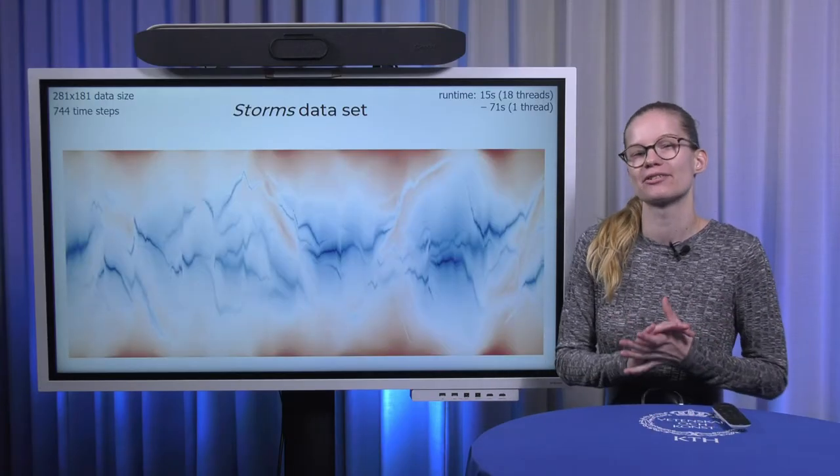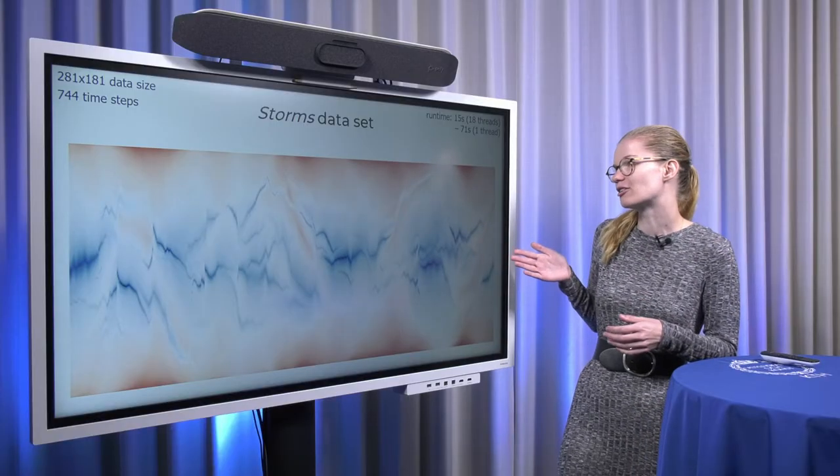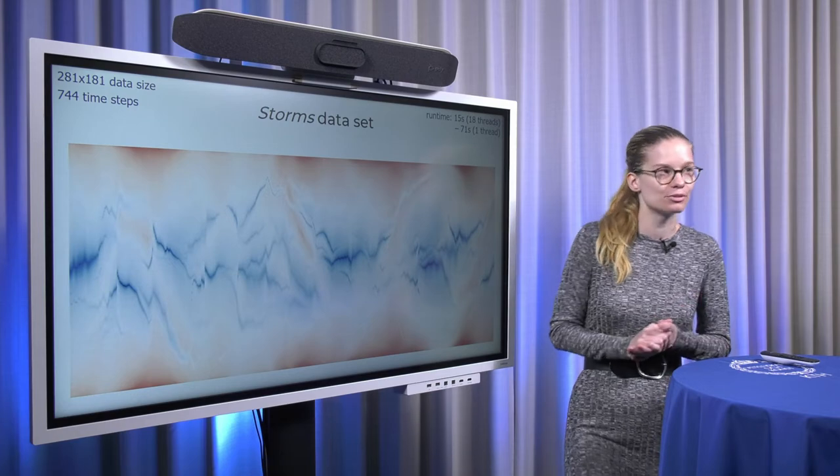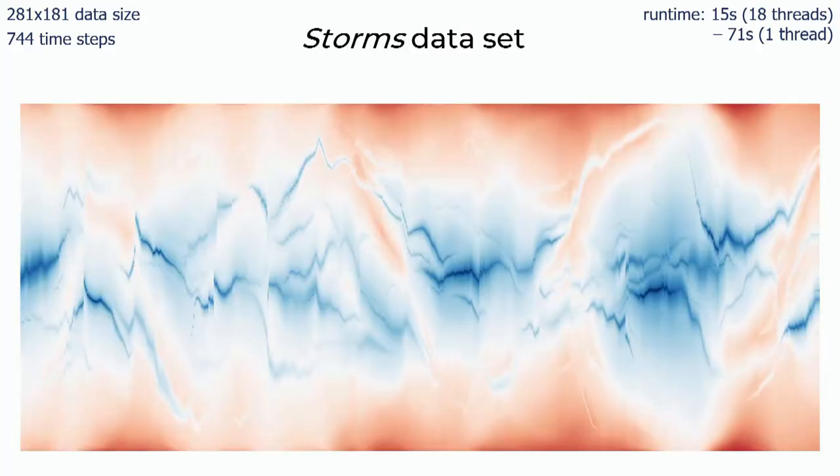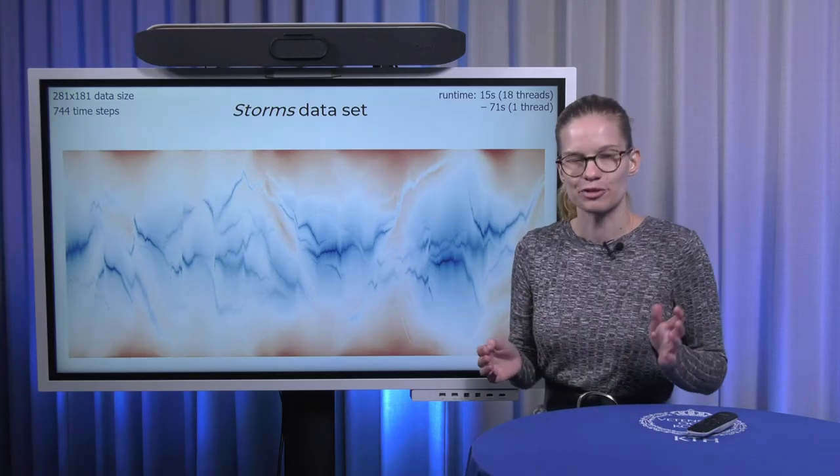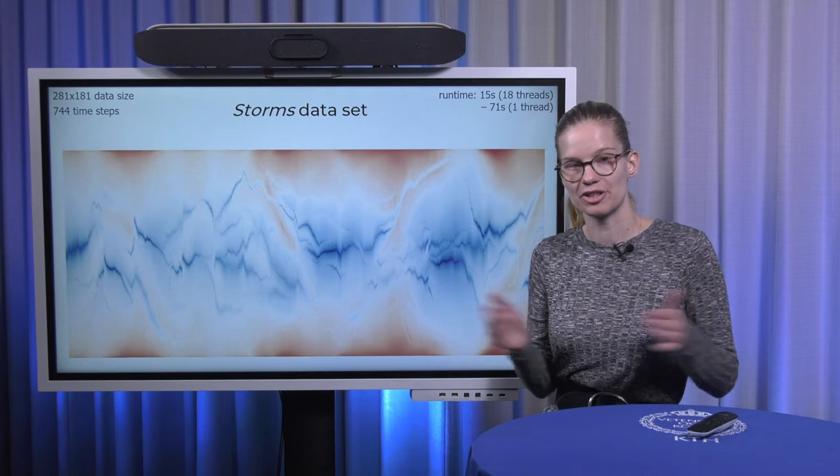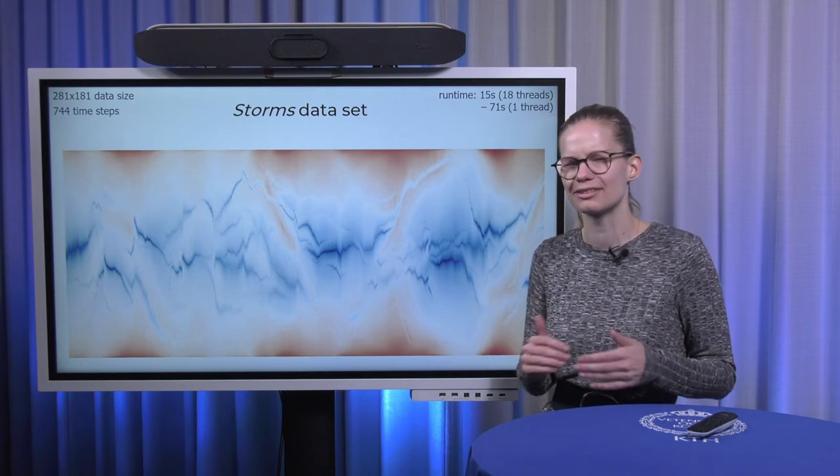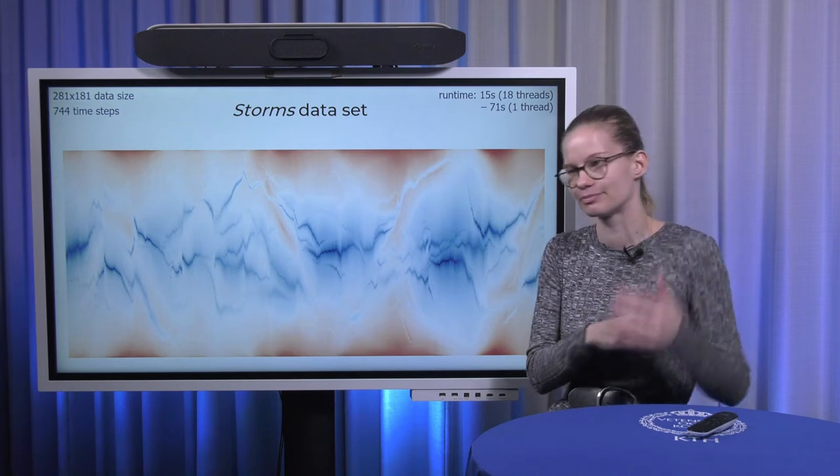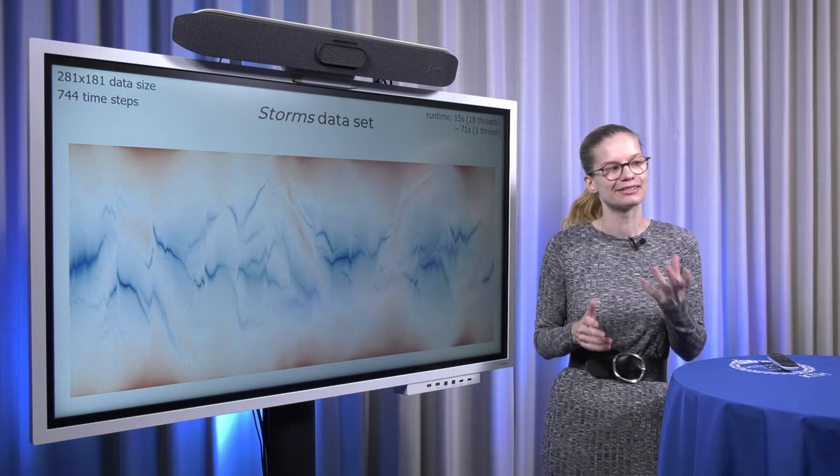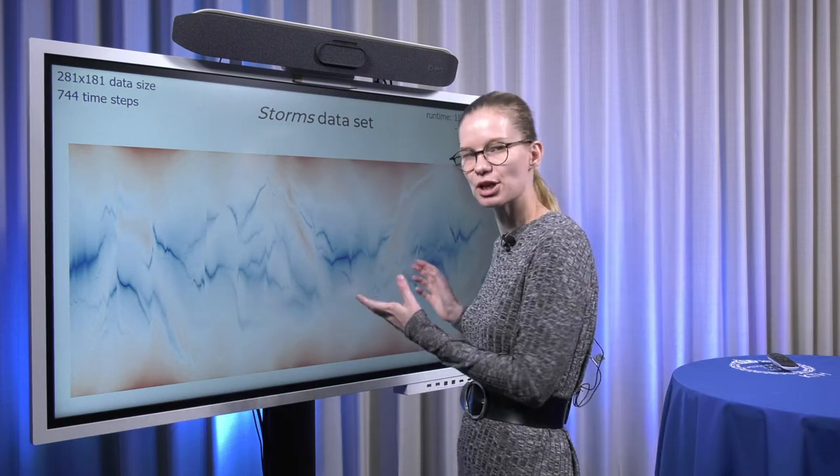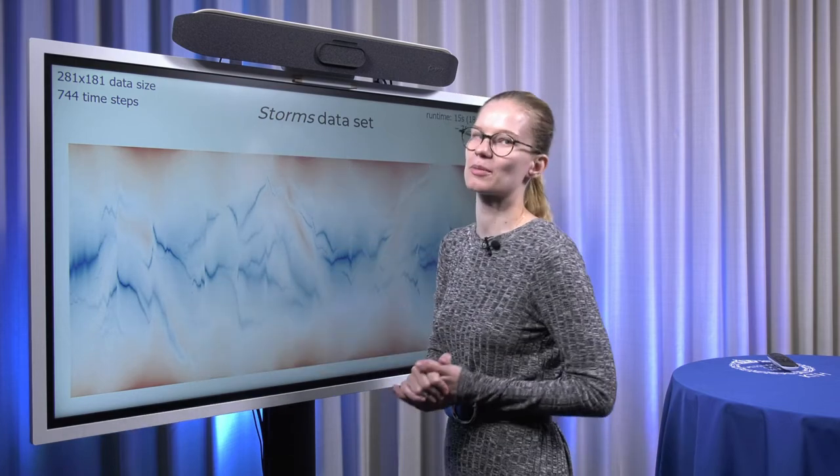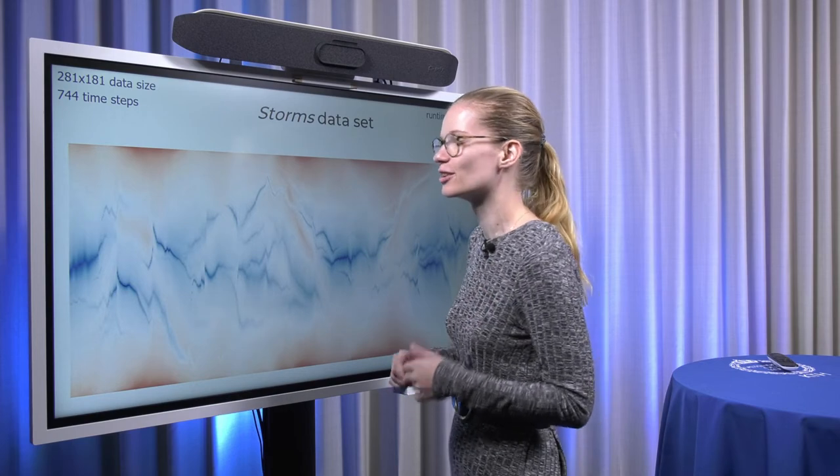But let's look at the results on a few more complex datasets. This is the result on the dataset that I showed you in the very beginning. It has 281 times 181 samples in space. That is essentially a half degree sampling of Europe. And then it covers an entire month sampled every hour, which gives us 744 time steps. 744 is not quite enough to fill a high resolution image in width, while 281 times 181 is too much to fill a high resolution image in height. So we do a combination of upsampling and downsampling to fill the image nicely. In the width, we just do linear interpolation and stretch each time step a bit. And in space, we just do a subsampling, skipping some of the data points in regular intervals to fill the image.